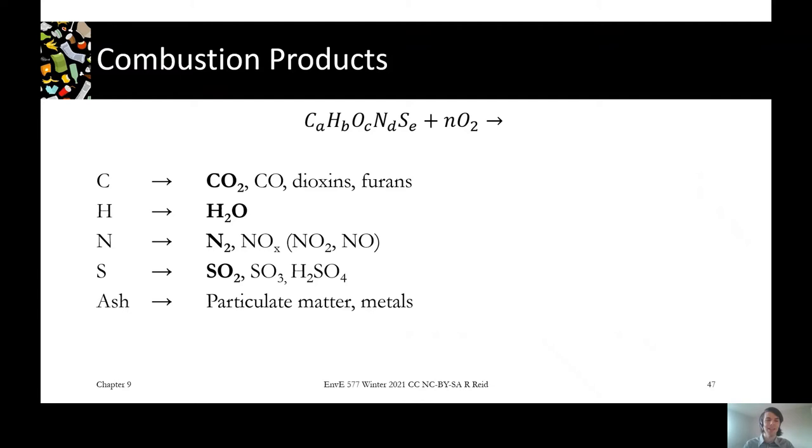Our ash will end up as particulate matter in our bottom ash or fly ash. There's also going to be some metals that end up in the bottom ash that we'll be able to extract later. For the most part, we don't consider any oxygen consumption by the ash fraction, although some metals will form metal oxide, but we tend to ignore it in terms of the oxygen requirement.